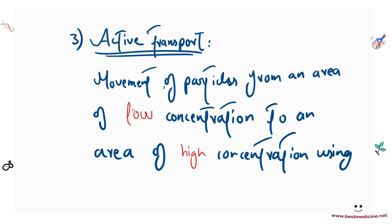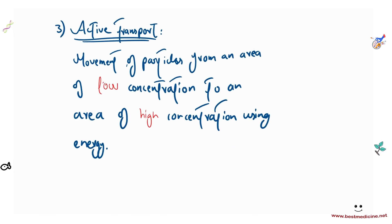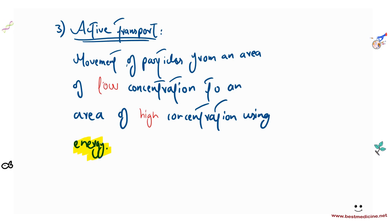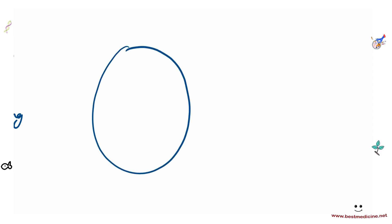Active transport uses energy. Remember when we discussed root hair cells — one of their adaptations is that they have many mitochondria to generate energy for active transport. Because active transport goes against the natural concentration gradient, you need energy from the mitochondria to drive this process.